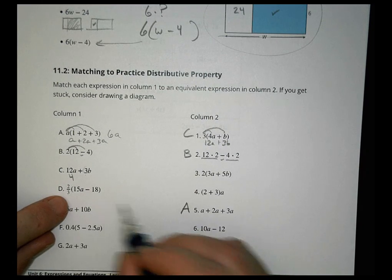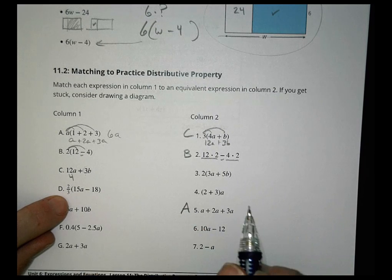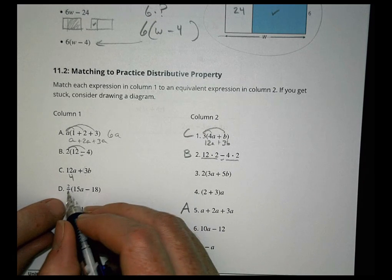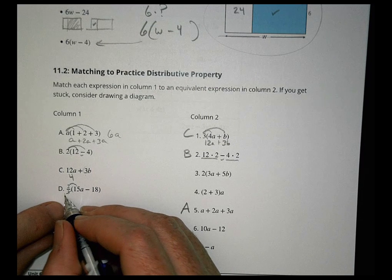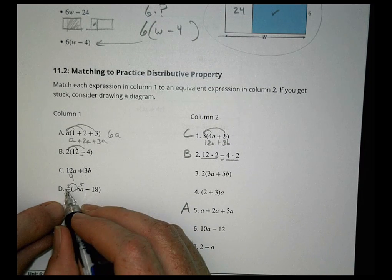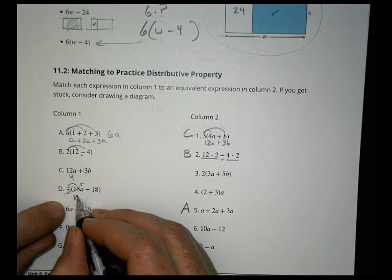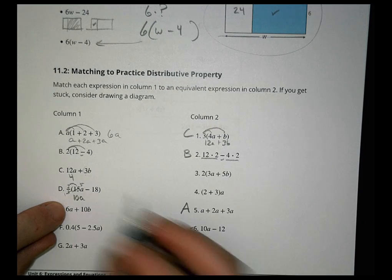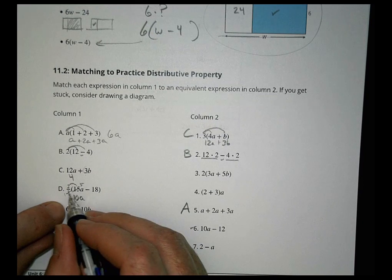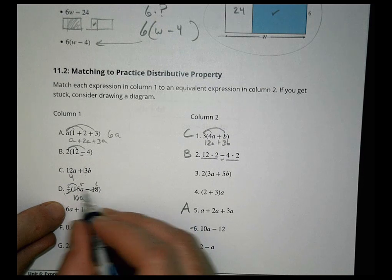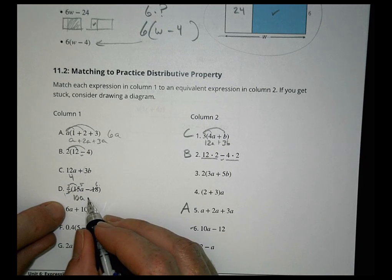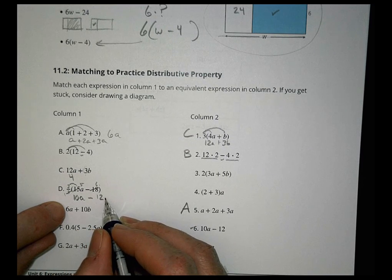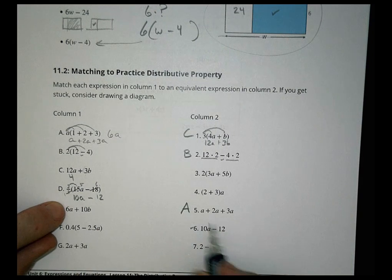Here we have 2/3 times (15a - 18). Let's go ahead and do this. 2/3 times 15a: 3 goes into 15 five times, so 2 times 5 is 10a. How about 2/3 times 18? 3 goes into 18 six times, and 2 times 6 is 12. So 10a - 12, and that one does match up just fine.